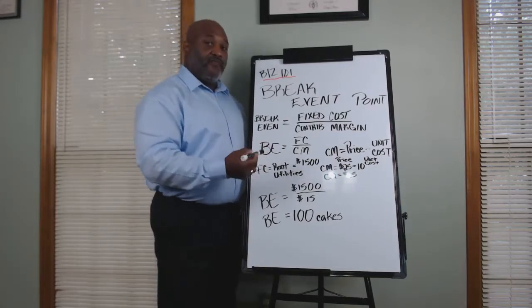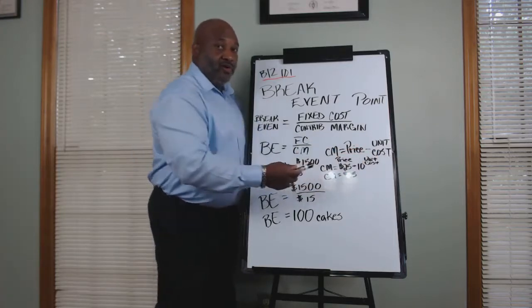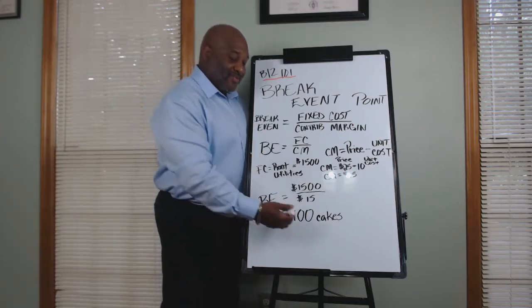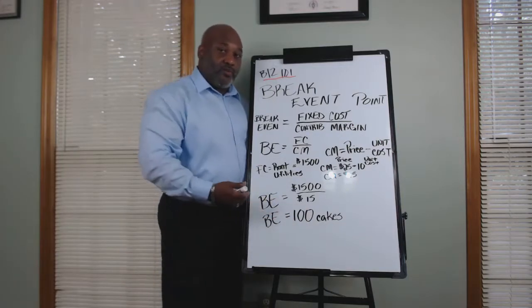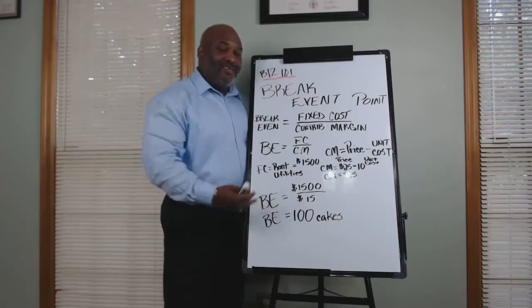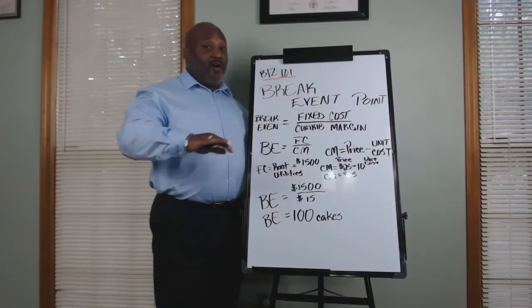Also, you may go to a different vendor in terms of the icing or batter and maybe decrease the unit cost. Again, that can increase your contribution margin where you have to sell less cakes in order to break even. So there are some adjustments you can make to it, but you need this information up front so you can realistically see what you have to do to just function on a monthly basis with your business.